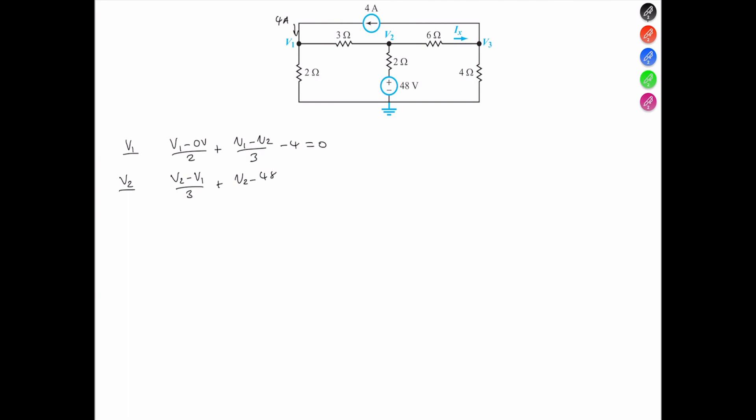If the negative sign was, if the volt source sign was flipped, we would take V2 minus a negative 48, which would be a plus 48. In this case, it's negative because we're seeing the plus sign all over 2-ohms.